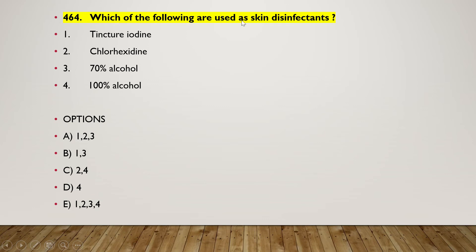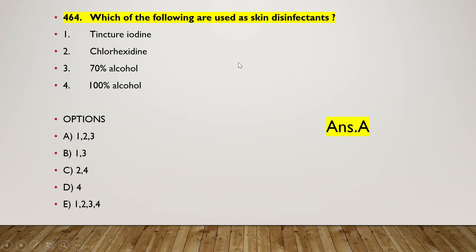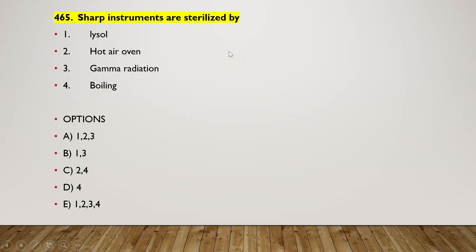The next question: which of the following are used as skin disinfectants — tincture iodine, chlorhexidine, 70% alcohol, or 100% alcohol? The right answer is option A — one, two, and three — tincture iodine, chlorhexidine, and 70% alcohol are used as skin disinfectants, not 100% alcohol.